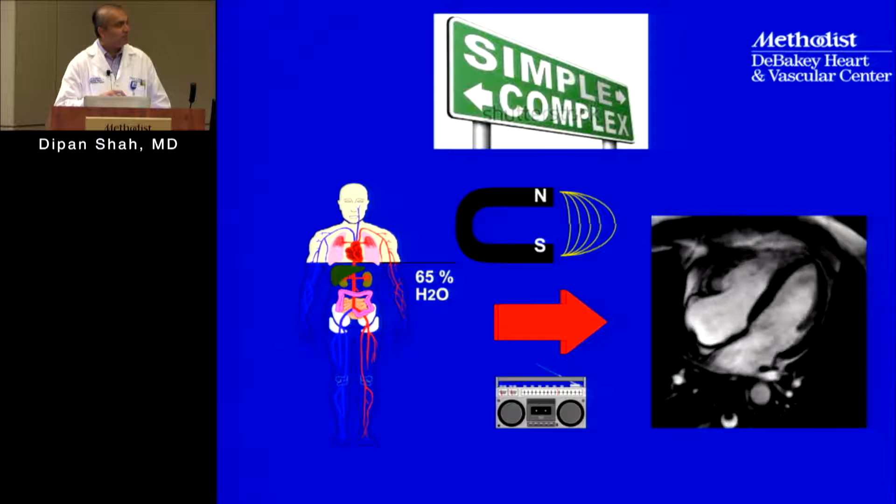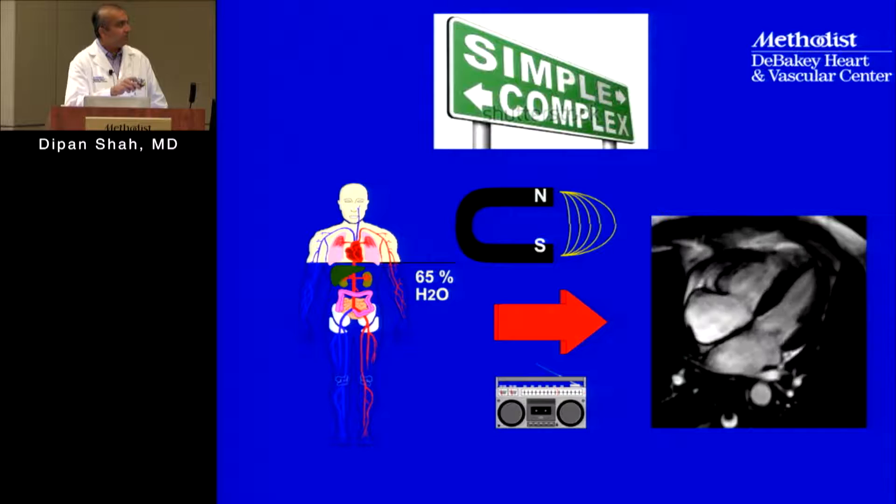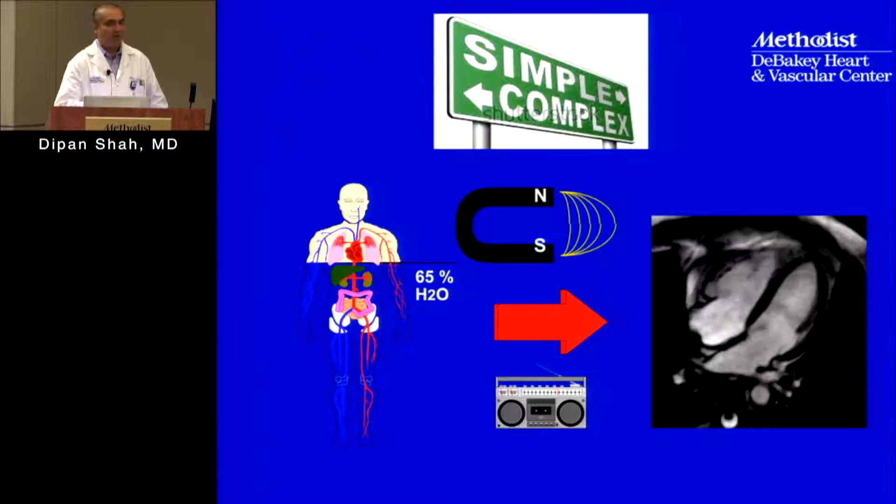The basic things we need are: a person or body to image, a magnetic field, and radio waves — and from that we're able to generate images. Obviously it's a little bit more complex than that.